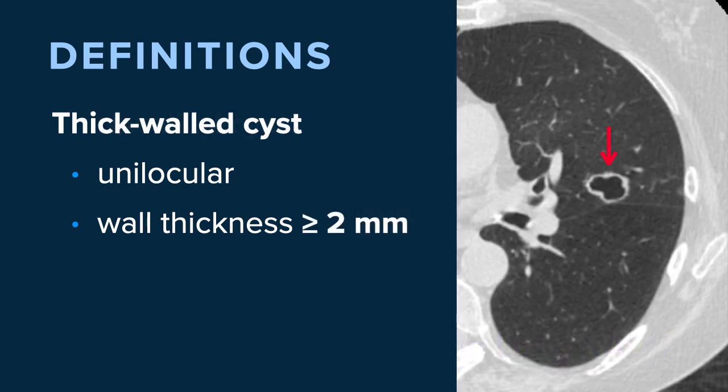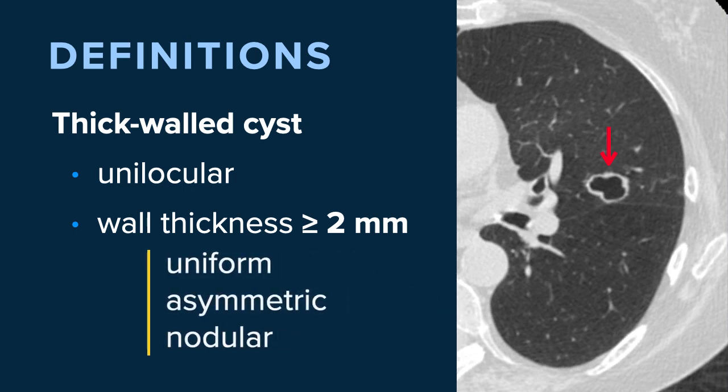So what are some atypical features? Well, thick walls. A thick-walled cyst is a unilocular cyst that has a wall thickness of two millimeters or more. This could be uniform wall thickness, or it could be asymmetric or focal nodularity. This particular example demonstrates more uniform or circumferential wall thickness of more than two millimeters.